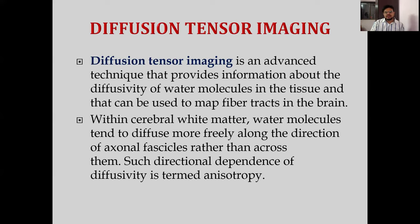Diffusion tensor imaging is an advanced technique that provides information about the diffusivity of water molecules in the tissue and can be used to map fiber tracts in the brain. Within the cerebral white matter, water molecules tend to diffuse more freely along the direction of axonal fascicles rather than across them. Such directional dependency of diffusivity is termed anisotropy.